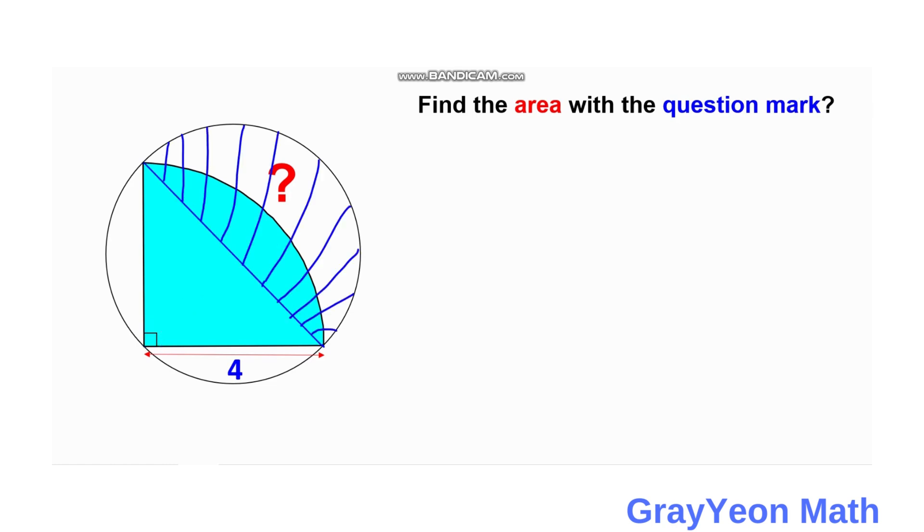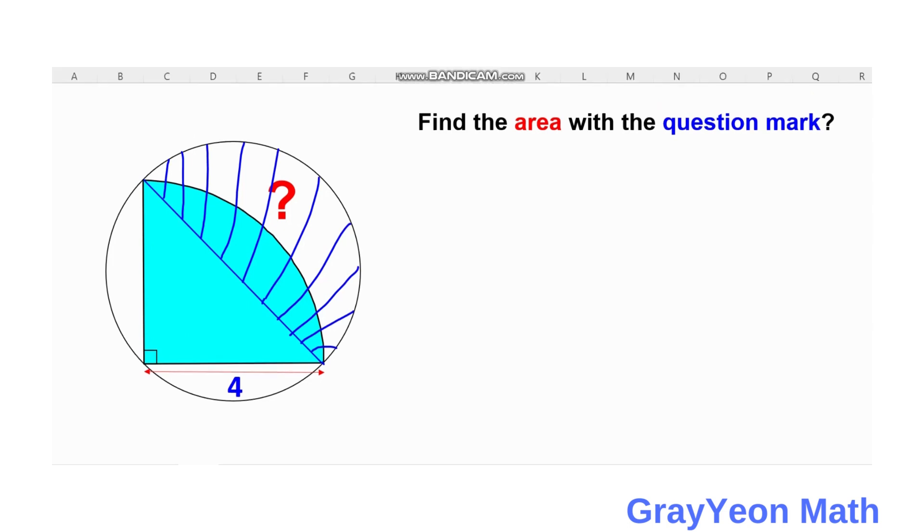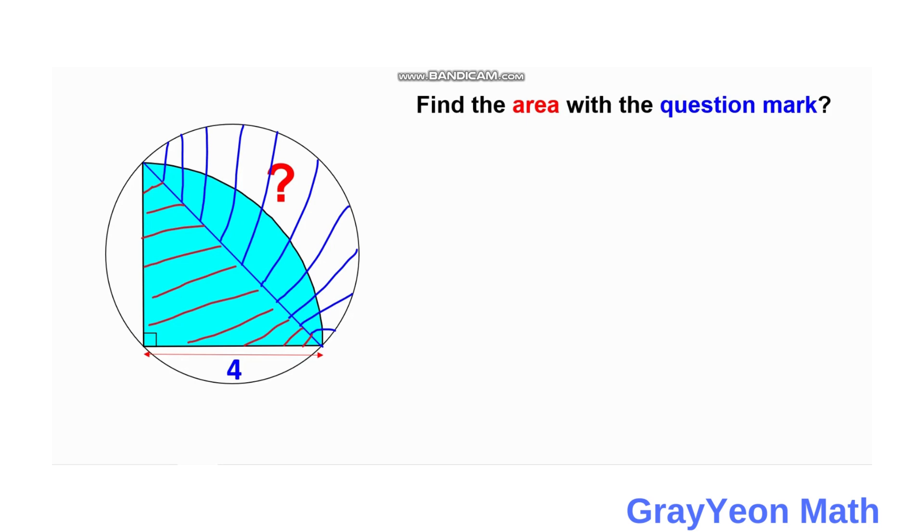Okay, so first thing we have to do is we need to find the area of this semicircle and we need to add the area of the triangle shaded with red, and you need to subtract the area of the quarter circle to get the area of the white region labeled with question mark.